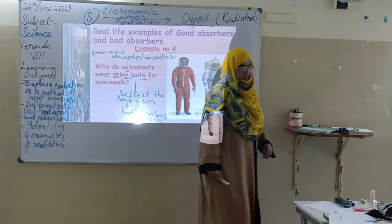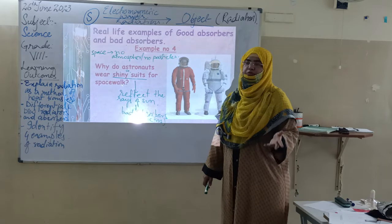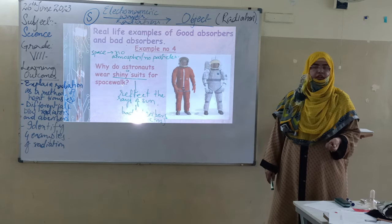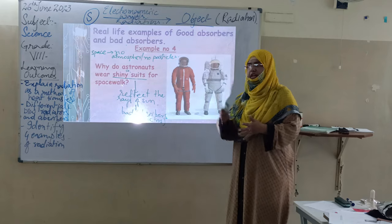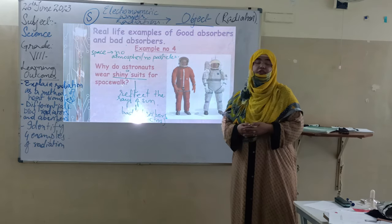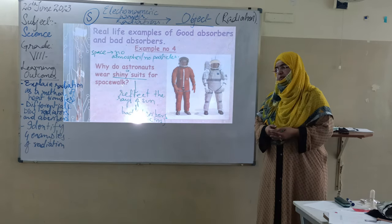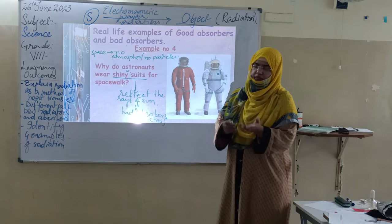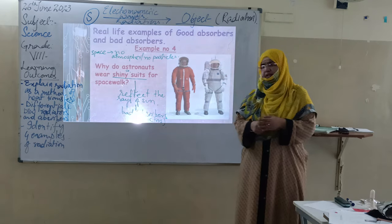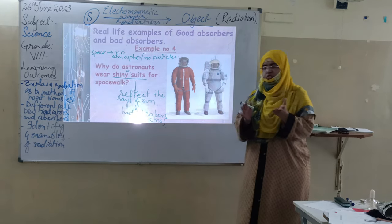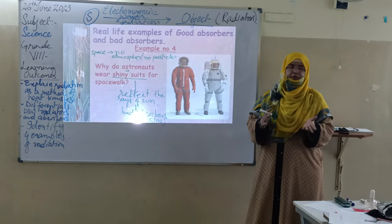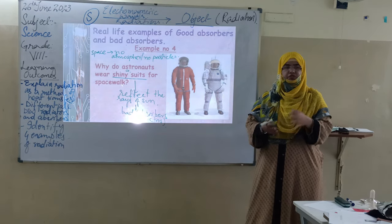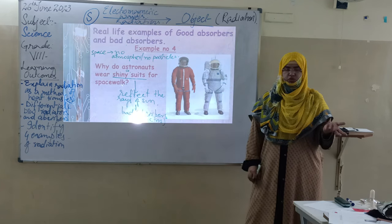If anyone has other examples from daily life they want to share — solar panels are much in use nowadays. As people are suffering from electricity problems, solar panels are a good replacement. They absorb the sun's heat, store it, and convert it into electrical energy. They are also portable and easy to move from one place to another. This is one of the very good examples of radiation being absorbed by a good absorber.